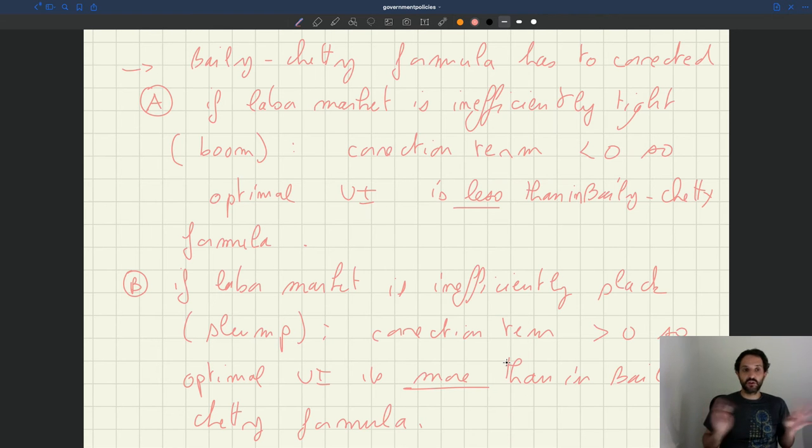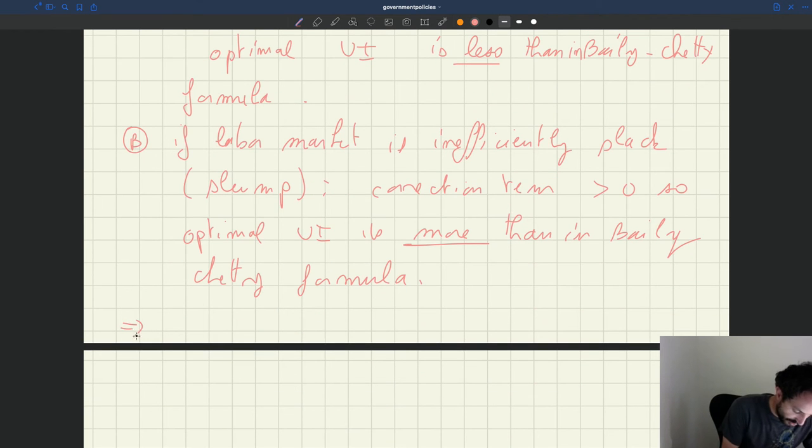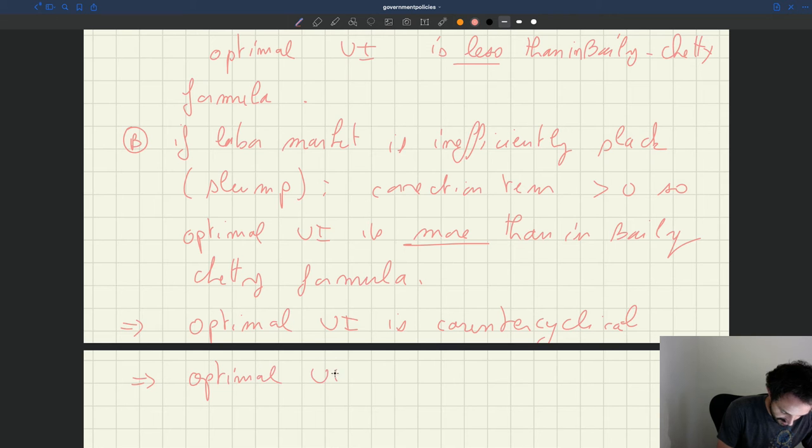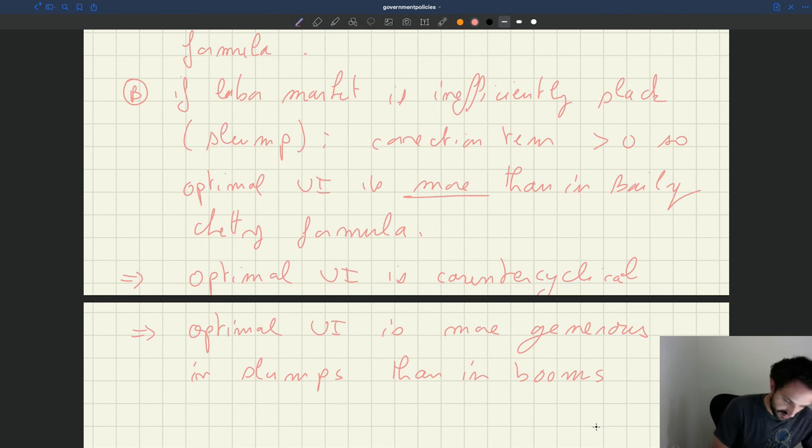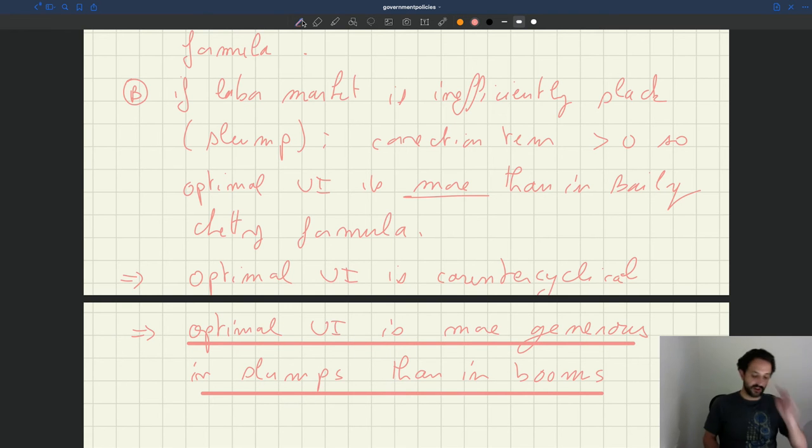Because the Bailey-Chetty level of UI is basically constant over the business cycle. So here, what you get is that your optimal UI is counter-cyclical. Okay, so what that means is that UI is more generous in slumps or in recessions than in booms or expansions. That's the key policy result that comes out of that.